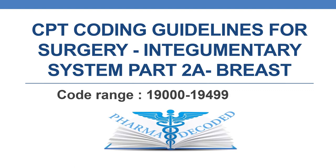Hello everyone. Now let us discuss CPT coding guidelines for surgery. In surgery, we are discussing about the integumentary system part 2a. In the current session, we will be focusing on breast, and the code range is 19002–19499.